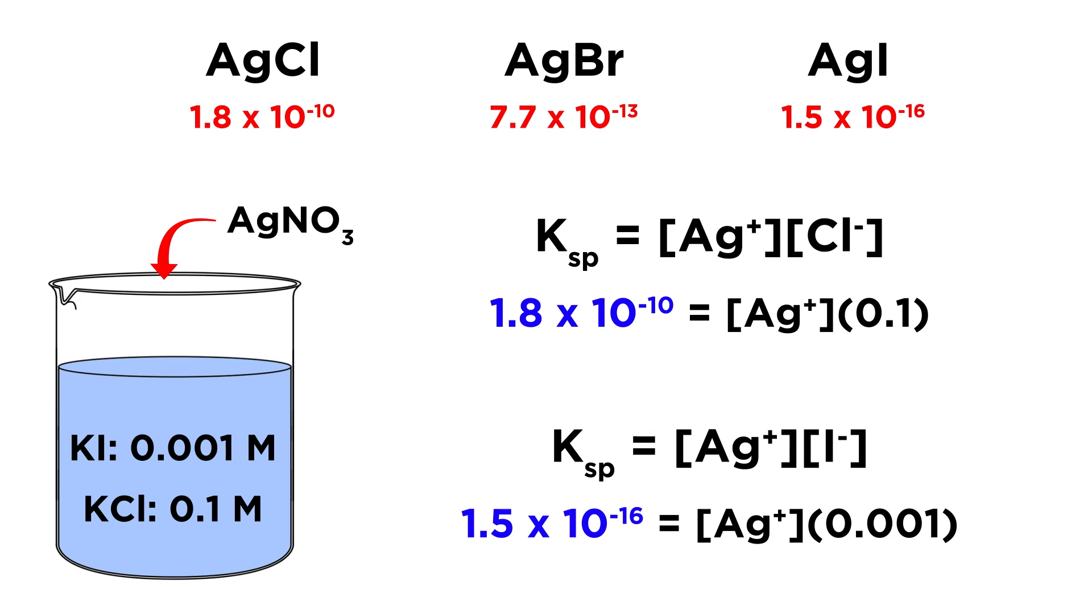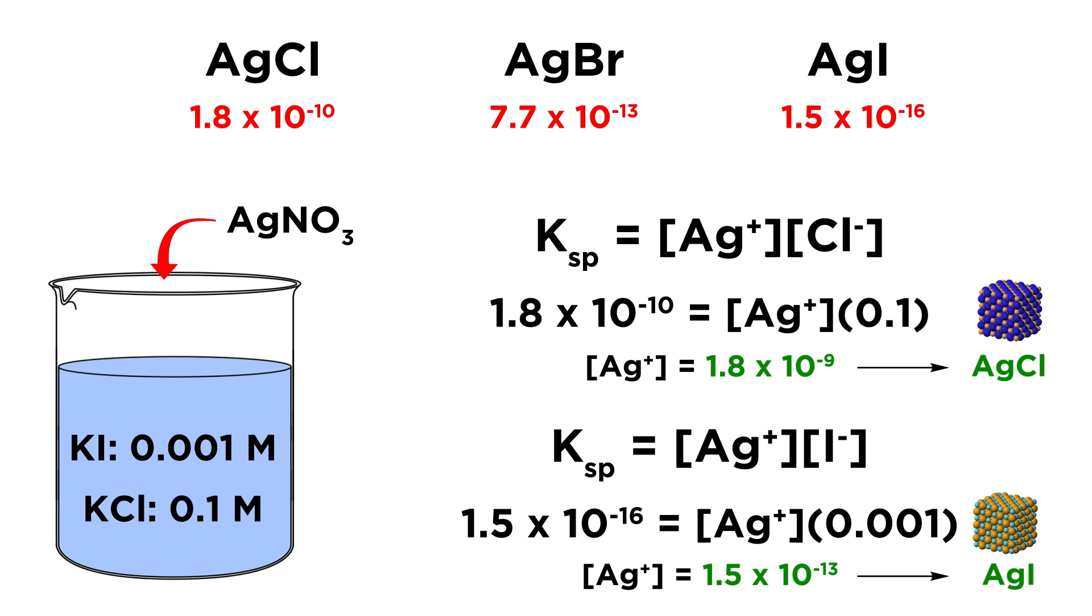All we have to do is divide the KSP value by the concentration of the respective halide ion. Silver chloride can begin to precipitate when the silver ion concentration is 1.8 times 10 to the negative 9 molar, while silver iodide can begin to precipitate when the silver ion concentration is only 1.5 times 10 to the negative 13 molar. So we can clearly see that silver iodide will precipitate at a much lower silver concentration than silver chloride, which means the silver iodide will certainly precipitate first, and will probably precipitate completely before any silver chloride will form.